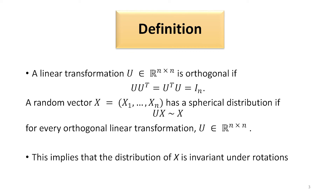Before we go further into spherical distributions, we need to know a few definitions. First, we will consider orthogonal linear transformation. A linear transformation u is orthogonal if u u-transpose is equal to u-transpose u, and that is equal to the identity matrix.